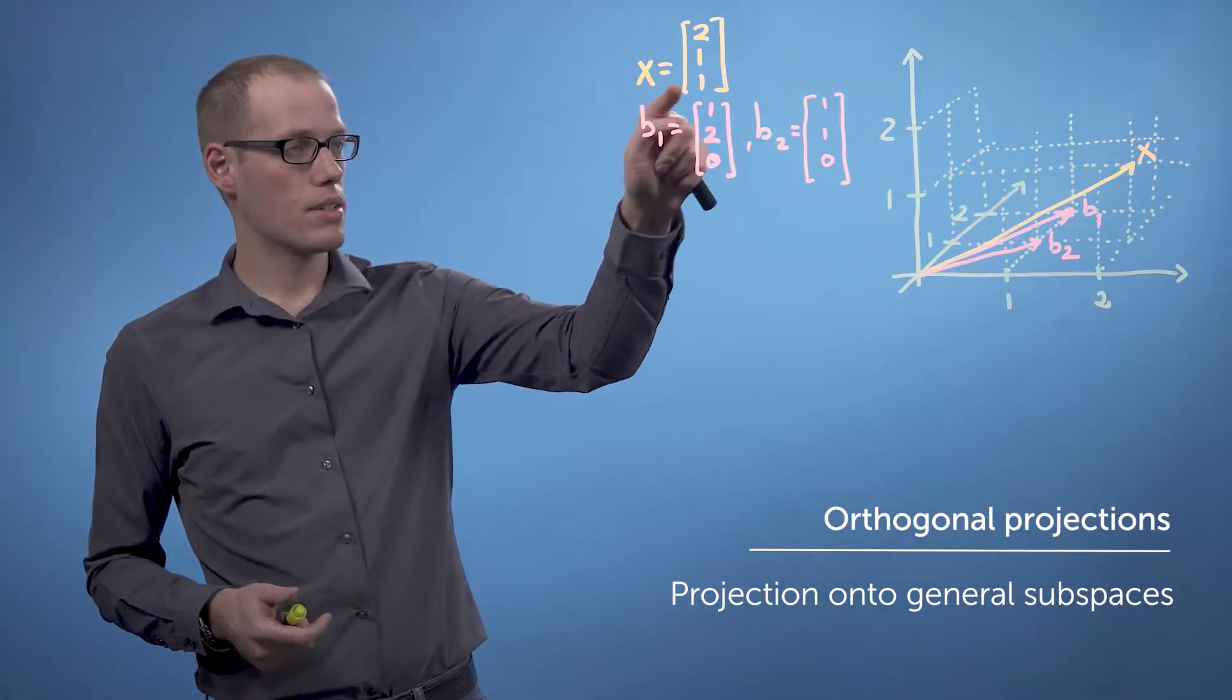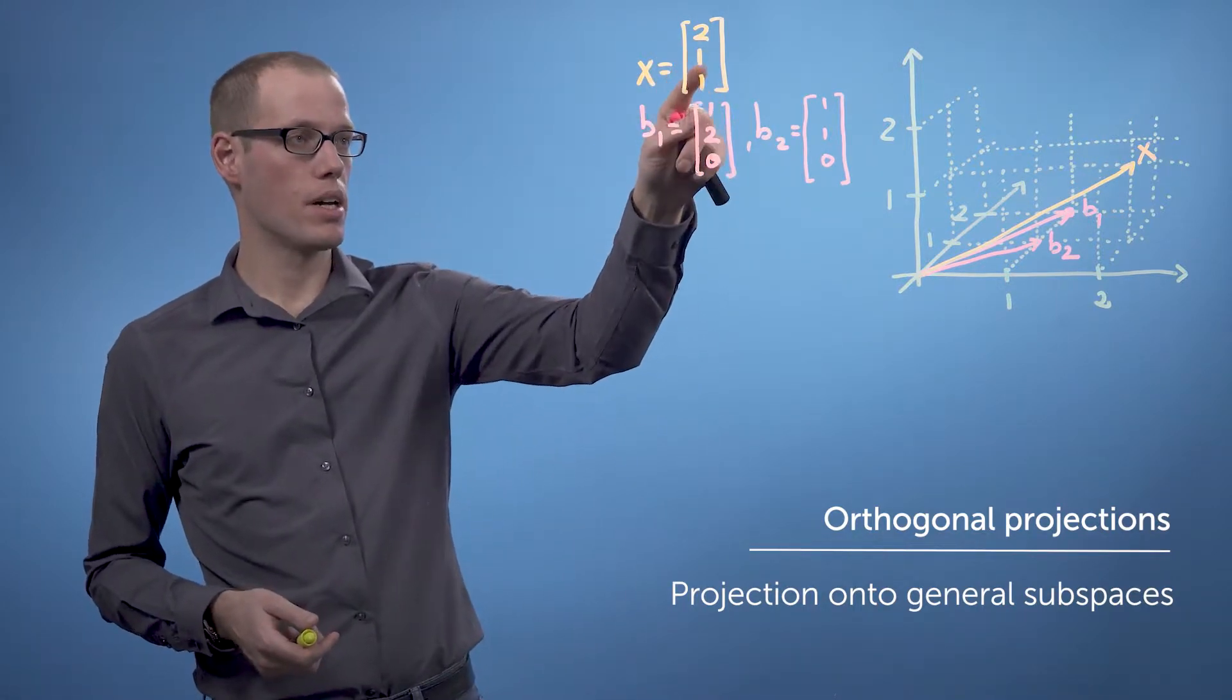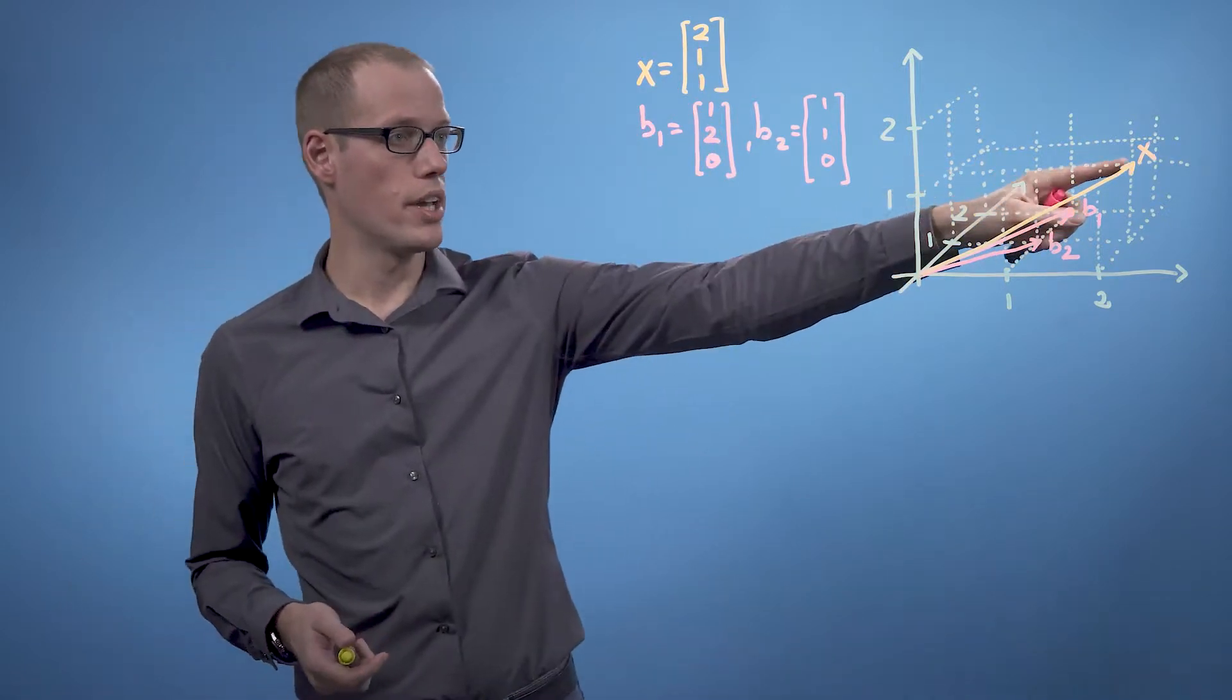We're going to define x to be a three-dimensional vector given by 2, 1, 1, which is over here.